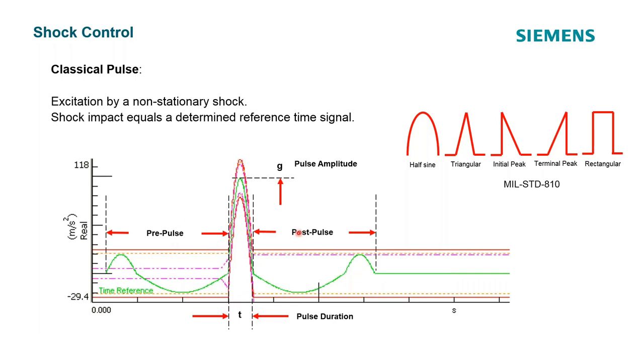The main pulse is typically determined from one of these reference time signals like a half sine, triangle, initial or terminal peak, or a rectangle. You could also use a measured pulse for this main pulse. For classic pulse, a lot of these are predefined pulses that you can use in the software, and I'll show that.